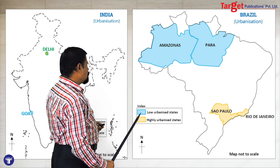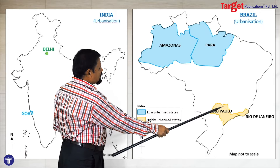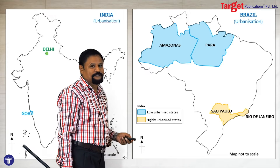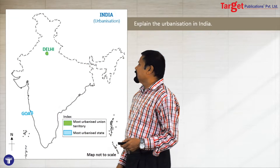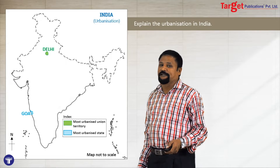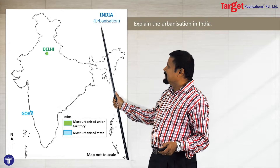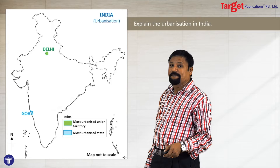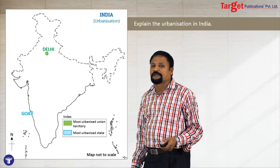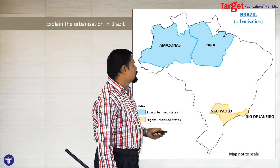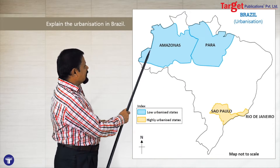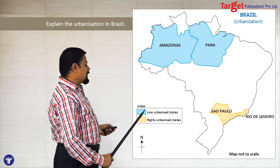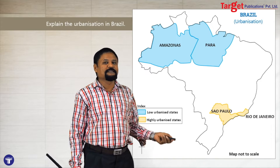For Brazil urbanization, Amazon and Pará are the non-urbanized states, while São Paulo and Rio de Janeiro are the highly urbanized states. Show at least two states each. If the question is only about India urbanization, then show Delhi as well as Goa. Or if the question is only about Brazil urbanization, you have to show only Brazil — Amazon and Pará as low urbanized states, São Paulo and Rio de Janeiro as highly urbanized states.